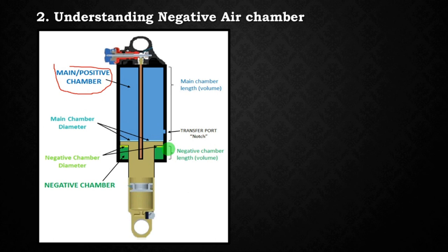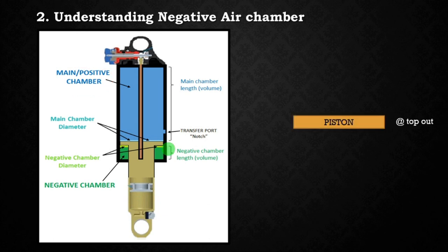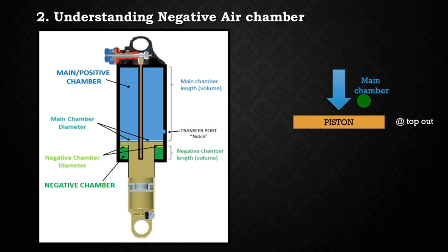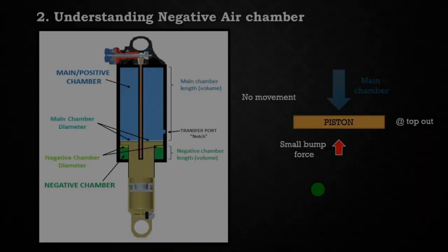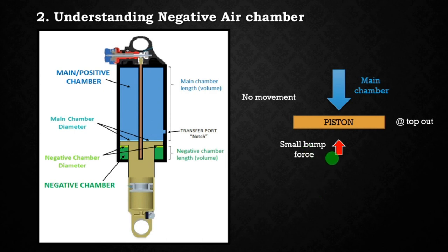Why do you need a negative air chamber? To answer this, let's forget the negative chamber and see what happens if you only have a positive main chamber. When the shock is at top-out, the main chamber is constantly exerting force against the piston because it is under pressure. This means the shock only compresses when you hit a very large force that counteracts this preload. If you hit a small bump, that force will not be enough to counteract the main chamber force and preload.